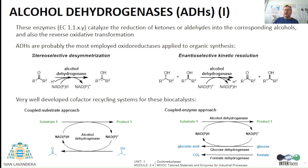Probably the most used dehydrogenases in synthesis are alcohol dehydrogenases that, as previously mentioned, are able to form chiral alcohols from the corresponding carbonyl precursors by desymmetrization, but also starting from racemic alcohols by oxidative kinetic resolution. As they depend on a nicotinamide cofactor, well-developed recycling systems have been established using 2-propanol as co-substrate in excess in a coupled substrate mode, or by utilizing glucose with glucose dehydrogenase or formate with formate dehydrogenase in a coupled enzyme approach.